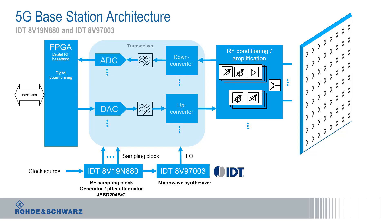IDT designed two devices for clocking wireless base station radio. This is the 8V19N880, which is a clock generator and jitter attenuator. The second device is the 8V9703, which is a microwave synthesizer. We would like to showcase these two devices today.